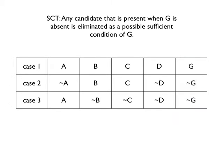Here's the definition of what we're calling a sufficient condition test. That says that any candidate that is present when G is absent is eliminated as a possible sufficient condition of G.